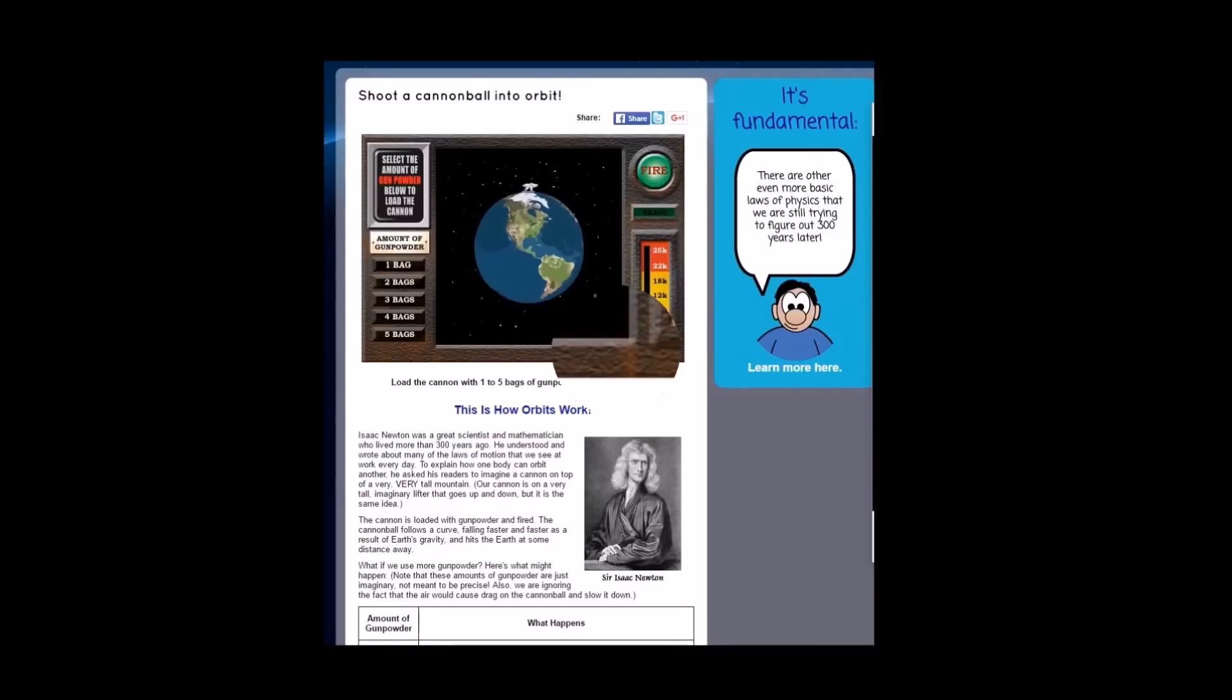NASA has a cool little game on their website that lets you shoot a cannonball in space. Let's say that you had a large cannon that you could shoot a really fast cannonball. So first you shoot it around 10,000 miles an hour. It's really fast and it'll eventually fall to the Earth. But then let's say you shoot it around 12,000 miles an hour. It'll go further but it'll still fall to the Earth.